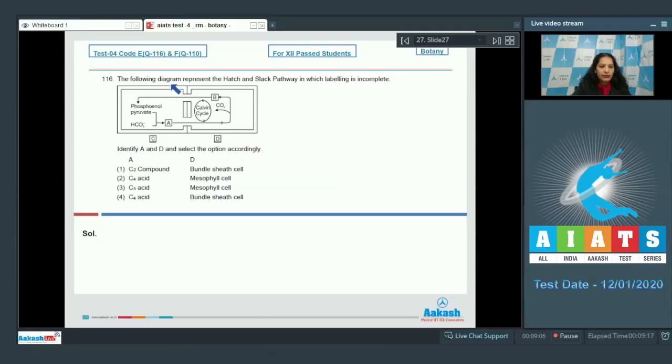Question number 116: The following diagram represents the Hatch and Slack pathway, the C4 pathway, in which labeling is incomplete. You have to identify A and D and select the option accordingly. The Hatch and Slack pathway involves two types of cells: the mesophyll cells and the bundle sheath cells, with primary fixation in the mesophyll cells.